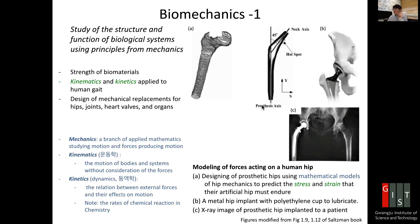To design an artificial joint that replaces a human hip, we use mathematical models of hip mechanics to predict the stress and strain that the artificial hip must endure. The hip joint is a ball-and-socket joint, and the design includes a metal hip implant with a polyethylene cup for lubrication. So not only mechanical considerations but also lubrication must be taken into account, as shown in X-ray images of the replacement.